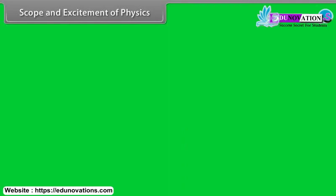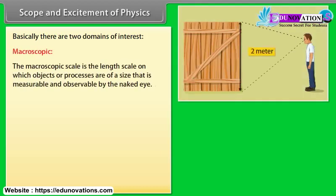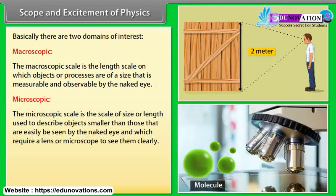Scope and excitement of physics: from a person beginning to work to communication over thousands of kilometers, physics has a very wide scope. Basically, there are two domains of interest. Macroscopic: the macroscopic scale is the length scale on which objects or processes are of a size that is measurable and observable by the naked eye. Microscopic: the microscopic scale is the scale of size or length used to describe objects smaller than those that can easily be seen by the naked eye, and which require a lens or microscope to see them clearly.